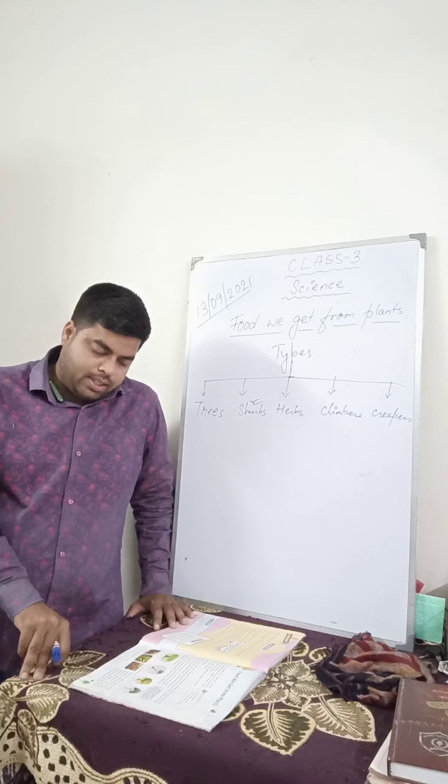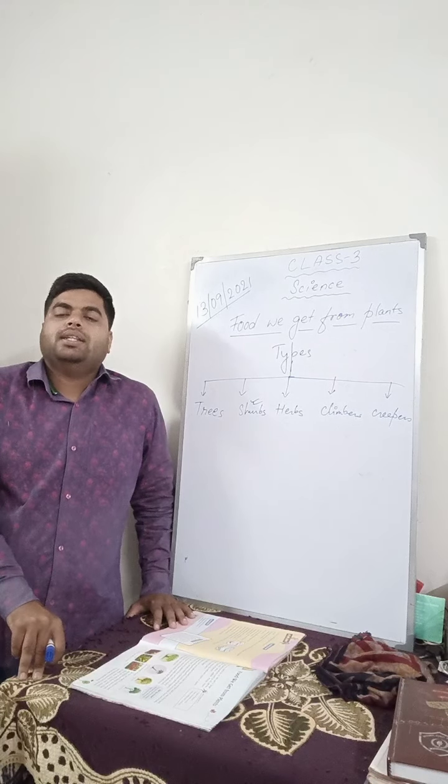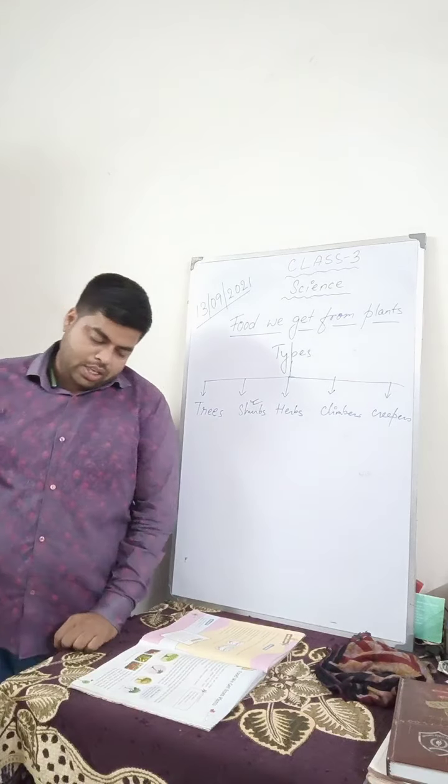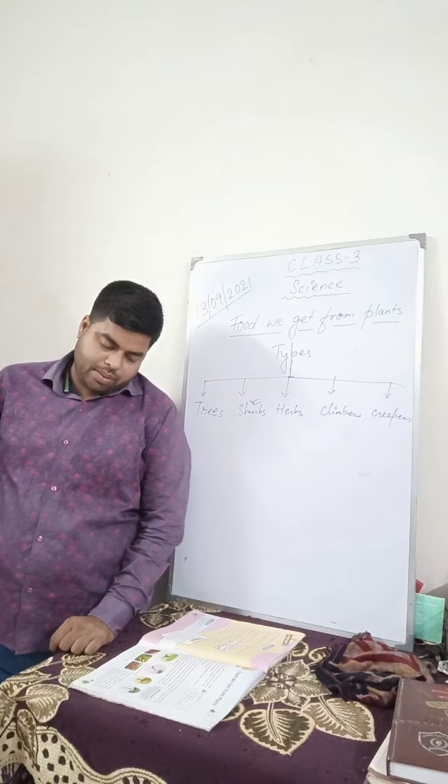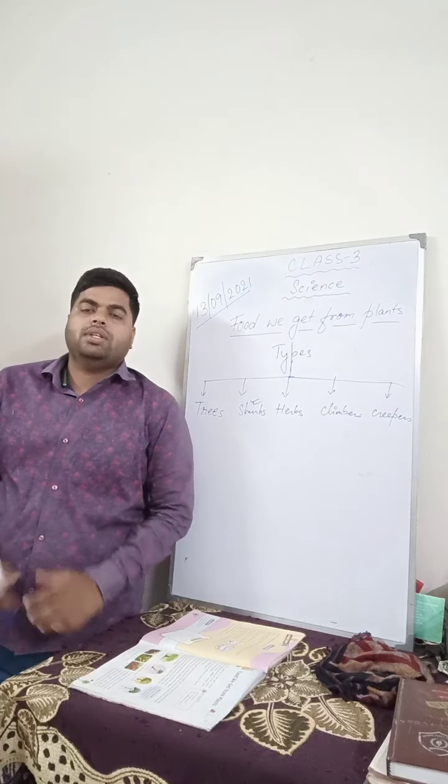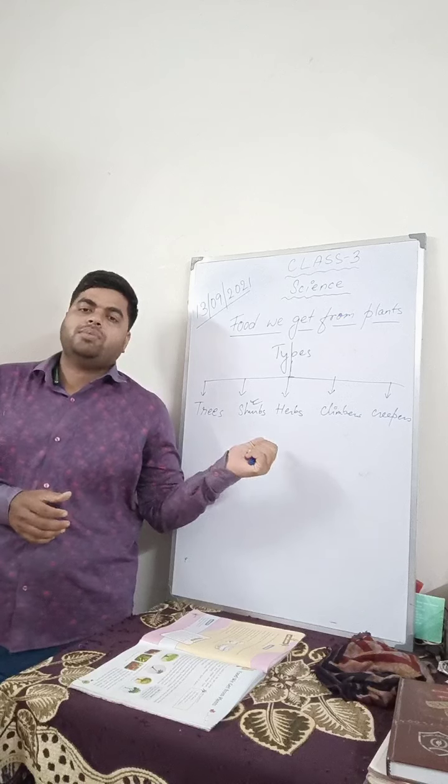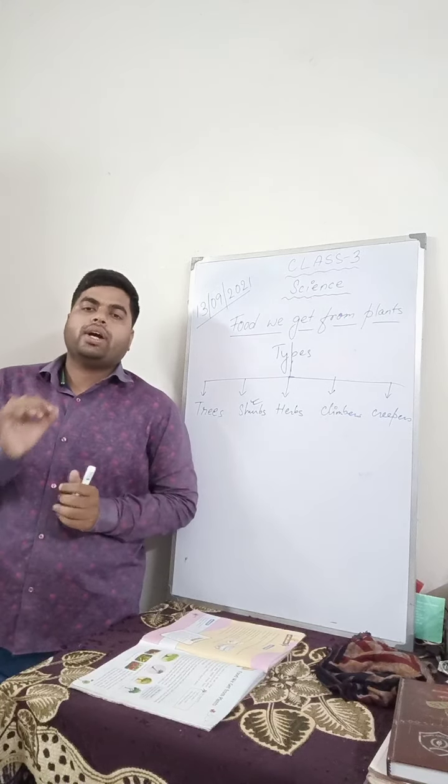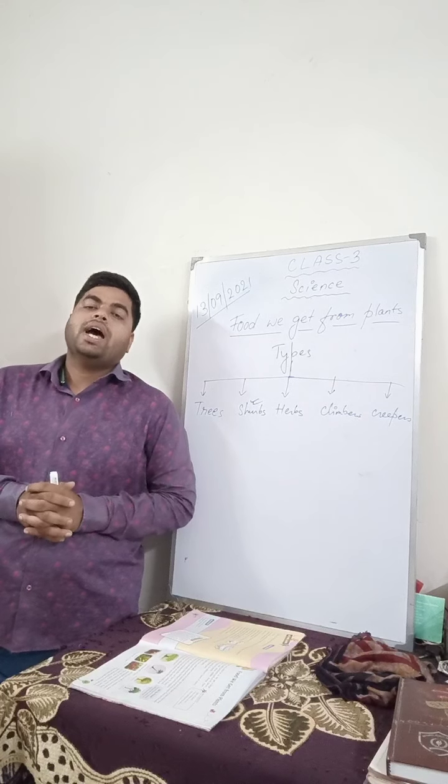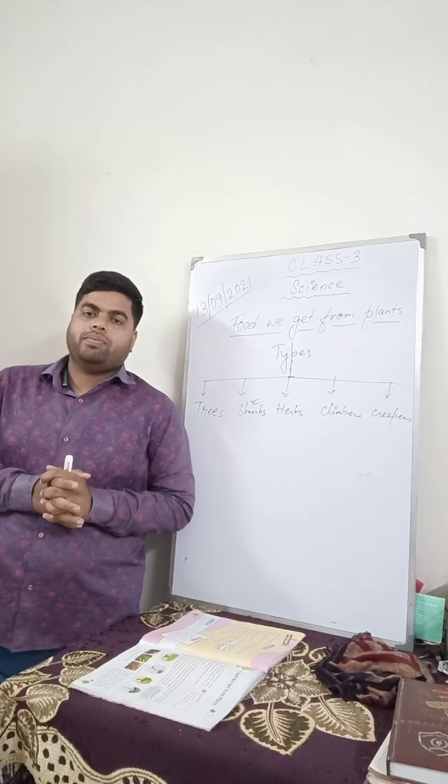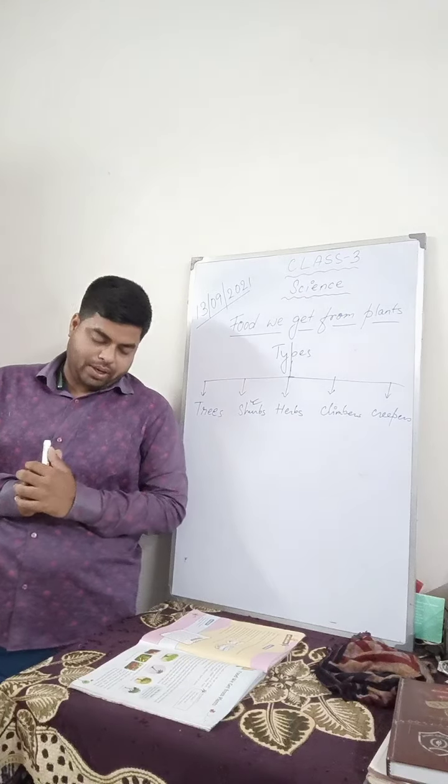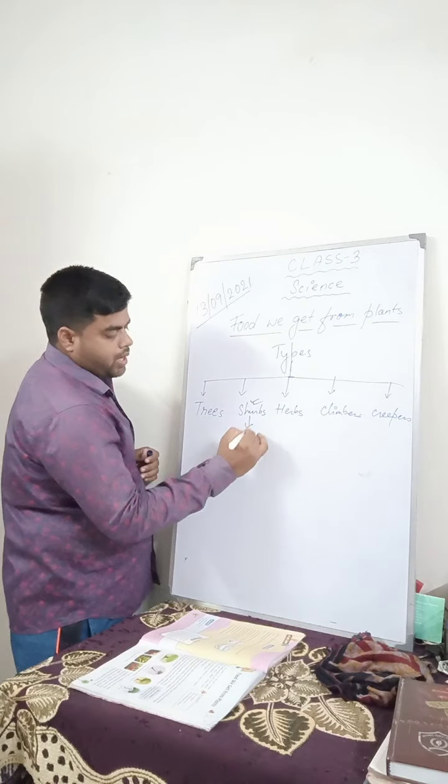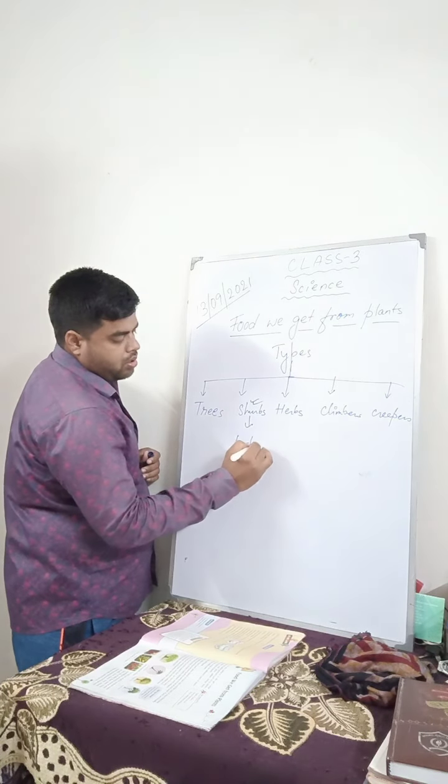They are smaller than trees. If you compare according to the size, they are smaller than the big trees that you find. They usually have thin woody stem growing close to the ground. The stem of shrubs are not as thick as trees but they are woody. They are strong enough to live for several years and support the weight of the plant and hold them upright. They are also called bushes.